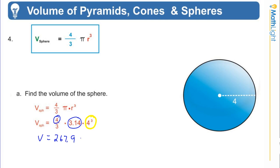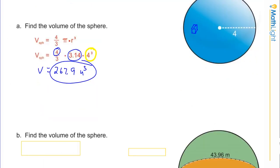Multiplying everything out and rounding to one decimal place, we get 267.9. There were no units given, so we write cubic units. The volume is 267.9 cubic units. Think about it as how many unit cubes fit inside that sphere — almost 268 of those cubes will fit inside.